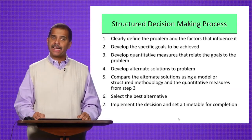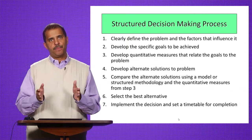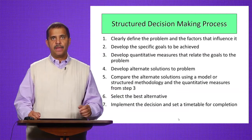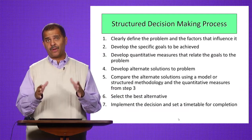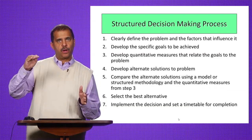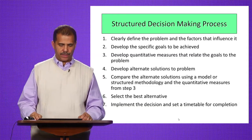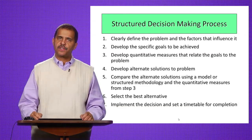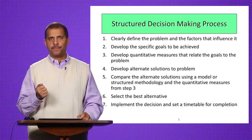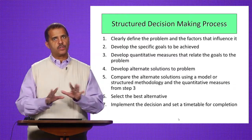Third, develop quantitative measures that relate to your goals. For example, if patient satisfaction as measured by a tool like Press Ganey is at the 75th percentile, we have about a 25-percentile gap, and our goal might be to achieve the 98th percentile — that's a quantitative metric. Fourth, develop alternative solutions to reduce this gap: do we hire different employees, change our compensation system, train them differently, or reset expectations with patients? All of those are possibilities.